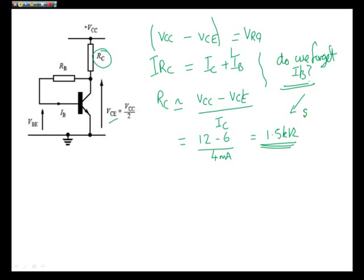Which equals 1.5K. There's our final solution. Obviously, we forgot IB. Therefore, this could be a starting point. It could be a starting point for our real value, which would probably be a little bit lower than this. But it's a good start.